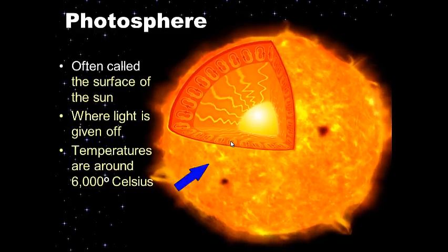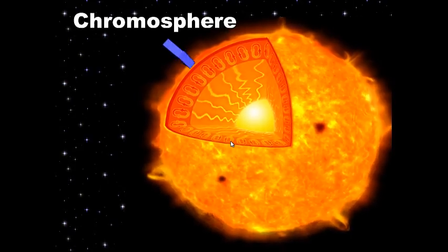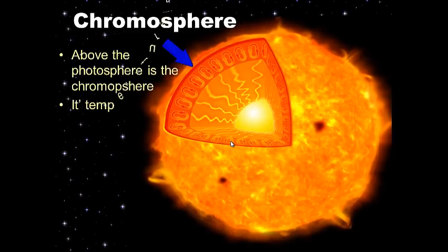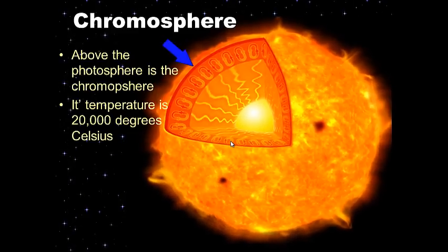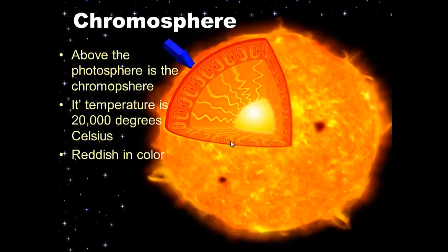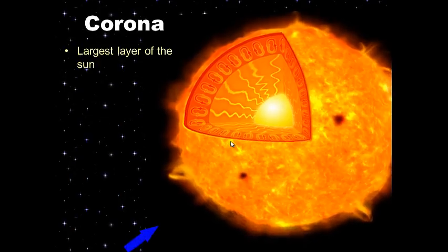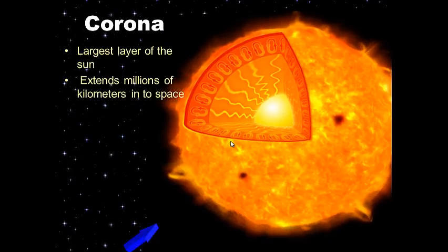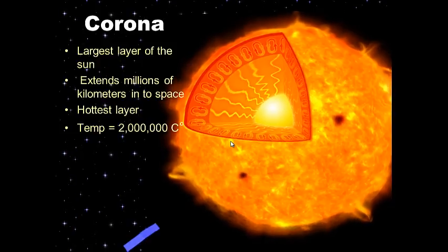Out past the photosphere is the chromosphere. Temperatures are around 20,000 degrees Celsius. It's reddish in color, and the key thing to know is its location in relation to the other layers. Out past the chromosphere is the corona, or crown — the largest layer of the Sun, extending millions of kilometers into space. The corona is the hottest outer layer, with temperatures of about two million degrees Celsius.